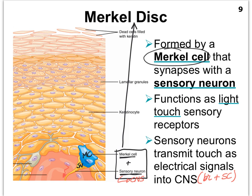Merkel discs we'll come back to as we study the nervous system and learn more about sensory receptors — of which we have many, such as photoreceptors in the eyes and hearing receptors in the ears. This wraps up our discussion of the different cell types found in the epidermis. Next we need to take a look at the different sublayers called strata in the epidermis, and then we'll take a closer look at the dermis.